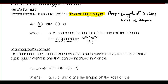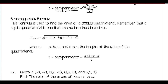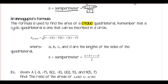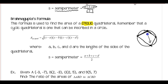That's Heron's Formula. Next we have Brahmagupta's Formula, used to find the area of a cyclic quadrilateral — it can only be used if it's cyclic. Cyclic means it can be inscribed in a circle; all of the vertices have to be on the circle. A property of a cyclic quadrilateral you can use to check is that the opposite angles are supplementary. So those two angles would be supplementary, and the other two angles would be supplementary.